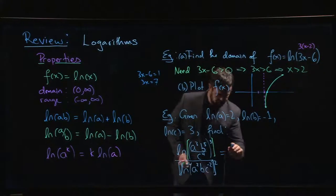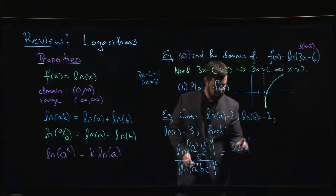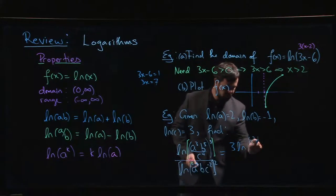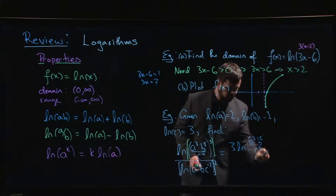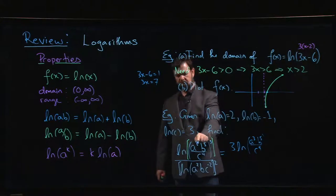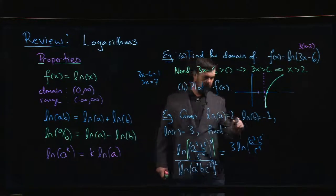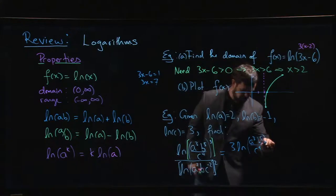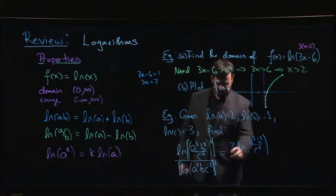We can write the top as three times the log of a cubed b to the 5 over c to the 4. The other thing we could have done is we could have applied the laws of exponents on the inside, a to the 9, b to the 15, c to the 4. It's going to work out the same in the end, whichever way we do it. That's fine.